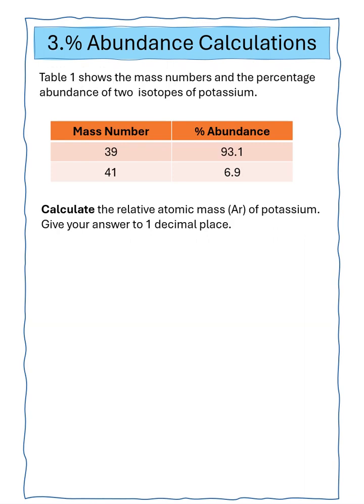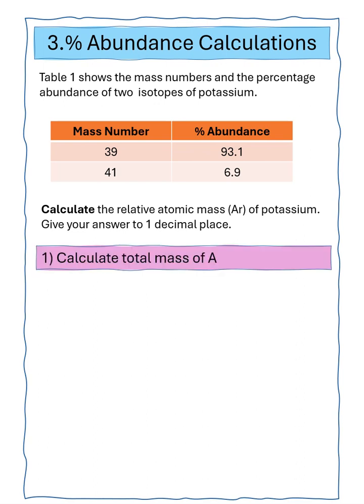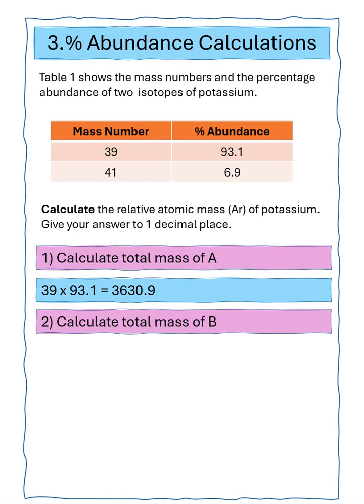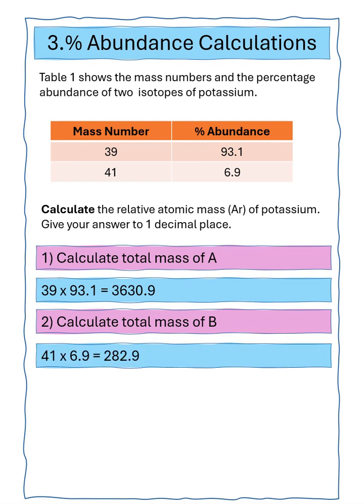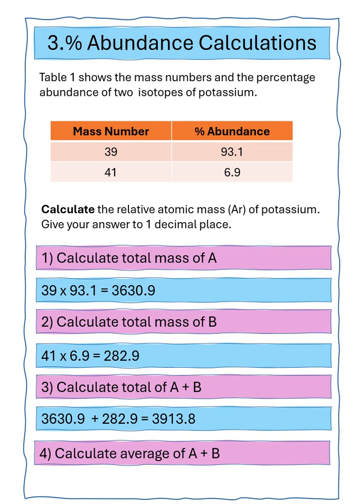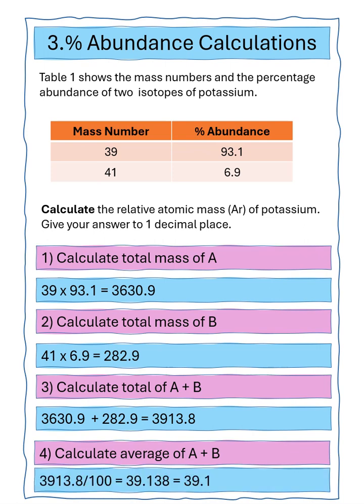Question three says the table shows the mass numbers and percentage abundance of two isotopes of potassium. We've got to calculate the relative atomic mass of potassium, giving our answer to one decimal place. Isotope A has a mass of 39, abundance 93.1%, giving a total of 3630.9. Isotope B has a mass number of 41, abundance 6.9%, giving a total of 282.9. Adding both together gives a total of 3913.8. Dividing by 100 gives us 39.138, which is 39.1 to one decimal place.